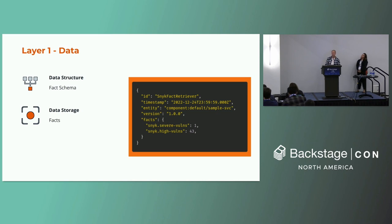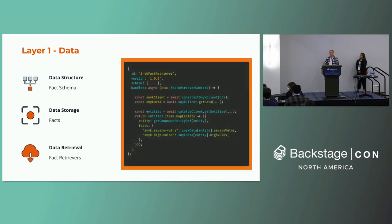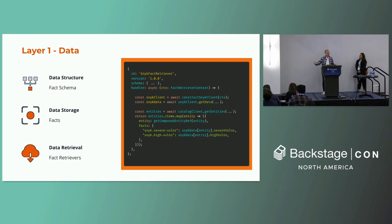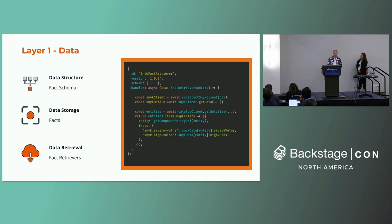The 'id' field introduces the last key term: fact retriever. In this example we have a Snyk fact retriever. A fact retriever is a logical concept that encapsulates both the schema and the logic needed to retrieve data from a third party and map it into the shape defined in the schema. Fact retrievers have a schema, a handler function, and a schedule so they can run on a loop.